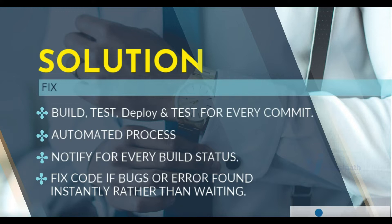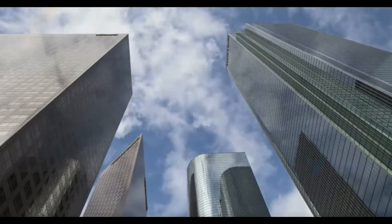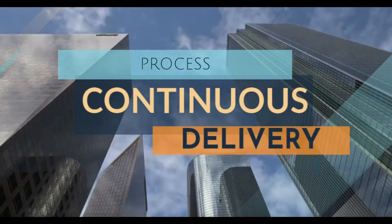A completely automated build, test, deploy, test cycle — this entire process is called the Continuous Delivery process. The word 'delivery' really means delivering it till pre-production, so your artifact is ready to deploy to production. We have not deployed to production — we are still waiting for approval. We have delivered it to all pre-production environments, tested it, and we are ready to deploy to production. We just need the approval. That's what Continuous Delivery is, and we'll understand it much better by doing it.